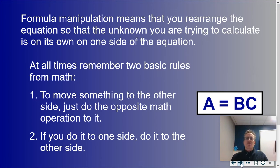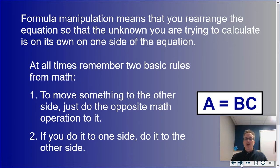When moving a formula around, we always follow two basic rules. First, to get a variable by itself, always do the opposite math operation — if you're multiplying, you divide to move it; if you're dividing, you multiply. That also works for adding and subtracting. Second, whatever you do to one side of the equation, you have to do to both sides.